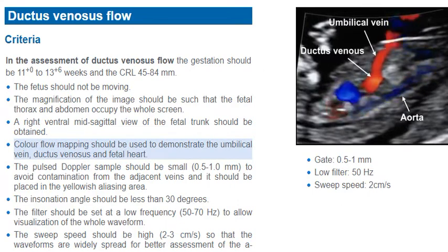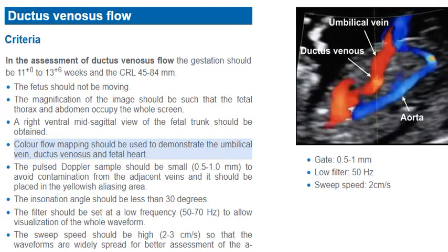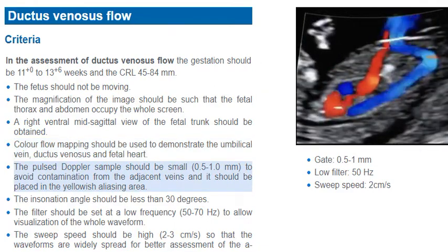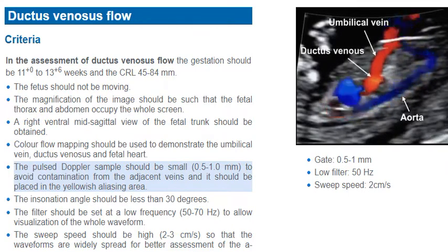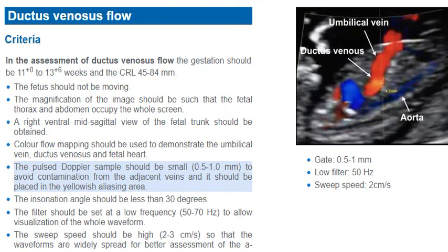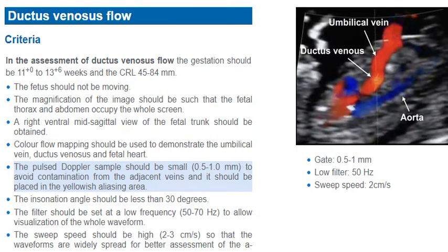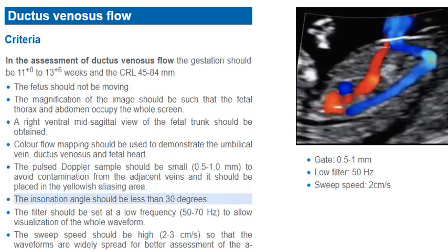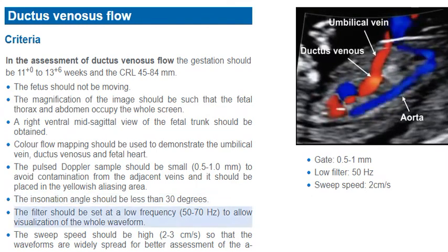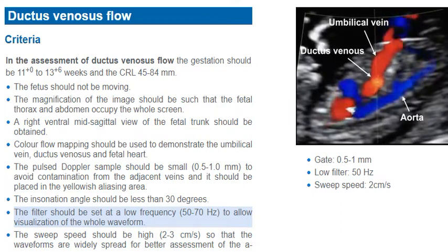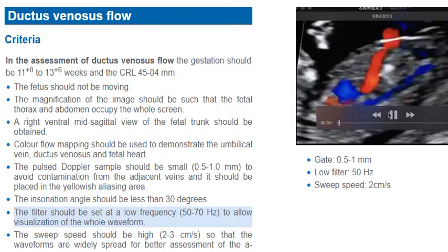Color flow mapping should be used to demonstrate the umbilical vein, ductus venosus, and fetal heart. The pulse Doppler sample should be small, between 0.5 and 1 mm, to avoid contamination from adjacent veins, and it should be placed in the yellowish aliasing area. The insonation angle should be less than 30 degrees to the vessel. The filter should be set at a low frequency, between 50 and 70 Hz, to allow visualization of the whole waveform.